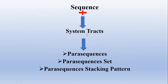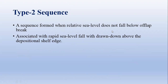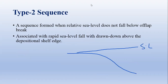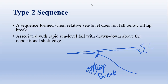A type 2 sequence forms when the relative sea level fall does not fall below the shelf break. Suppose the sea level is at this position and a sea level fall occurs, but the sea level fall doesn't go below the shelf break point — then the sequence forming is termed a type 2 sequence. It is associated with a slow sea level fall, with the ground remaining above the depositional shelf edge, which is the point where the shelf separates from the slope.